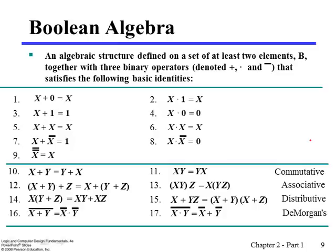Boolean algebra is an algebraic structure defined on a set of at least two elements, say 0 and 1, together with three binary operators: the OR operator, AND operator, and NOT operator.